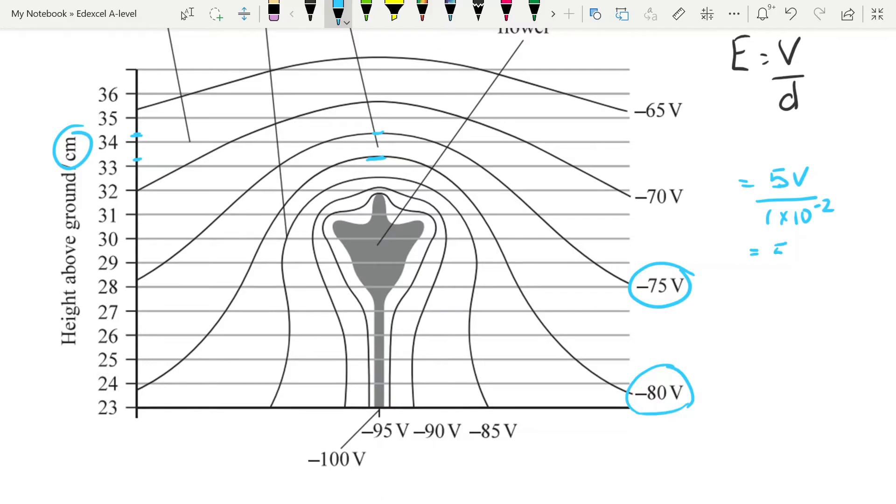And that gives us 500. And here's a new unit for electric field strength, volts per meter. Although the context is very unusual, and threw a lot of people off, it's not that difficult a question.